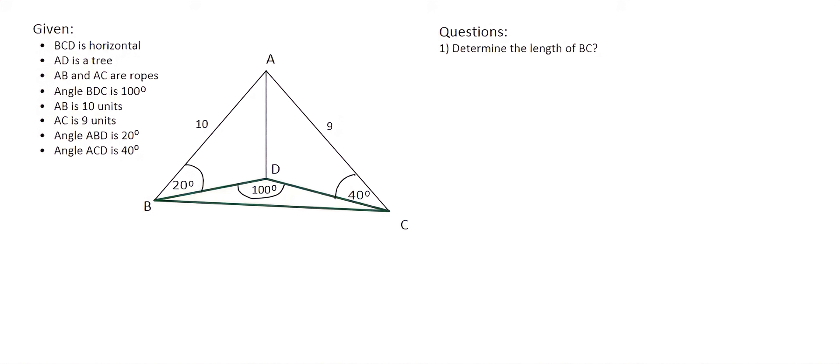We've got some pole in the ground, so AD is a pole, and then AB is a piece of rope and AC is a piece of rope, for example. So it's a three-dimensional question. When they tell you, for example, that AD is a tree, here they've used the example of a tree.